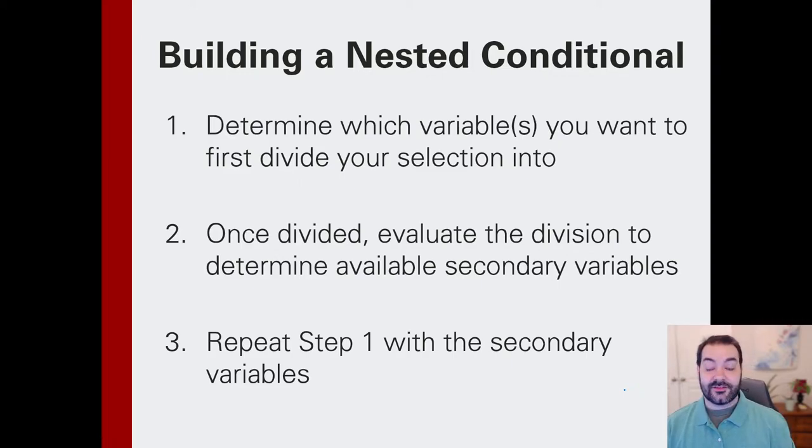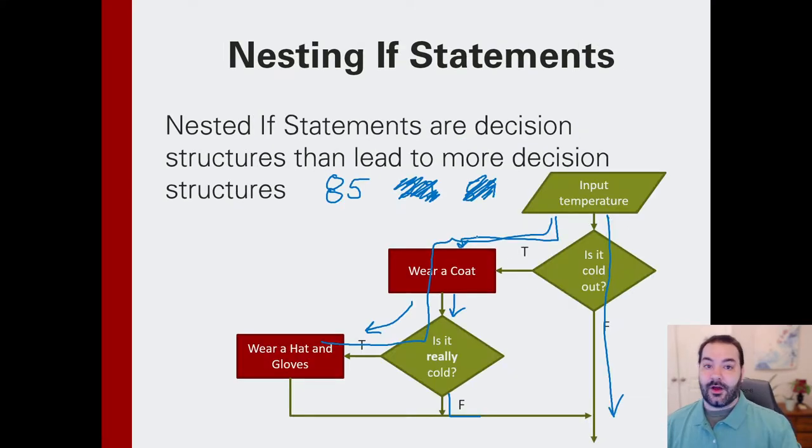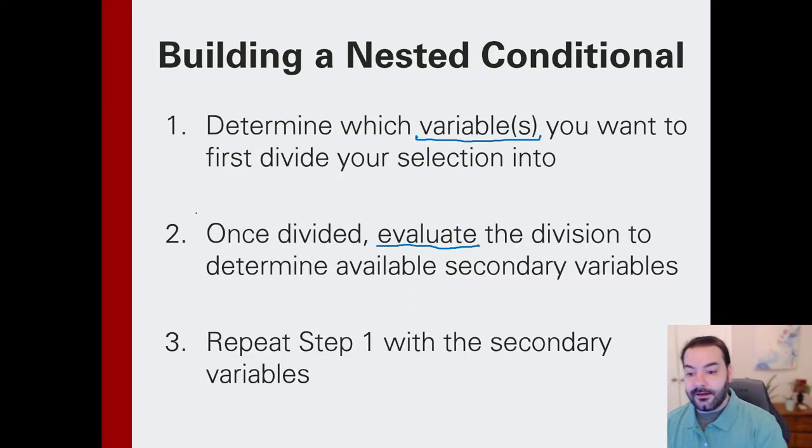When we are building out these nested conditionals, the big thing that we first need to do, because this can really branch out, is establish what are the variables that we want to work off of for our criteria. That's going to be how we first divide out our categories. Once they are divided out, then we need to make another evaluation. What do I need to evaluate now? In the case of my temperature example, once I established it was cold, I needed to reassess how cold. Is it super cold, or is it just marginally cold? Then all I need to do is continue to repeat that process over and over again.